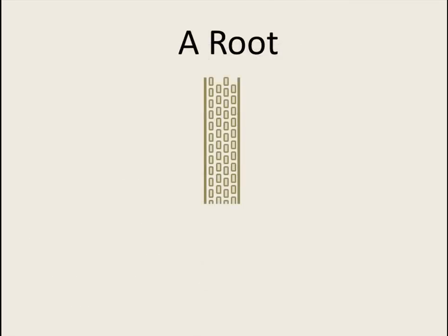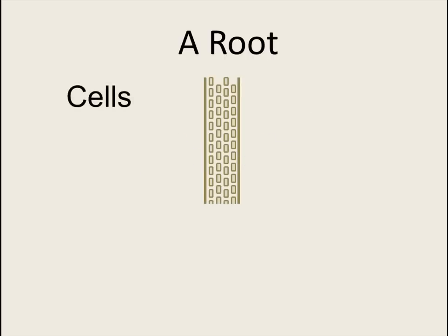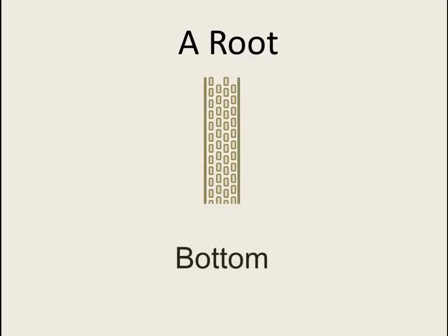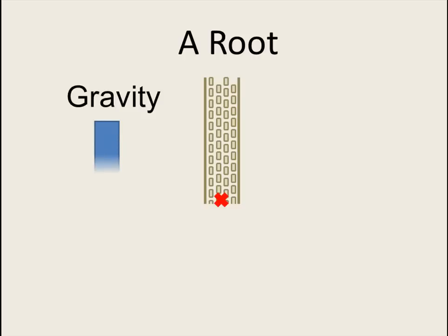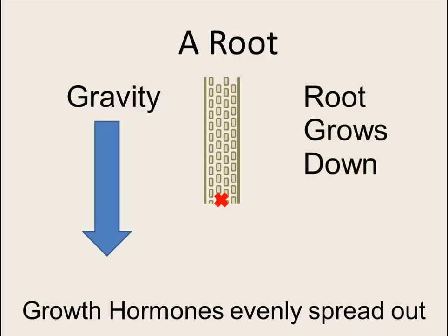Here I have a very simple example of a root. The outside would be these solid lines. The cells on the inside would be these little boxes inside those solid lines. The bottom of the root, which is where the root grows, would be down here. Gravity is always pulling the root down. The growth hormones are evenly spread out at the bottom of the root, where the root grows. So the root grows down.